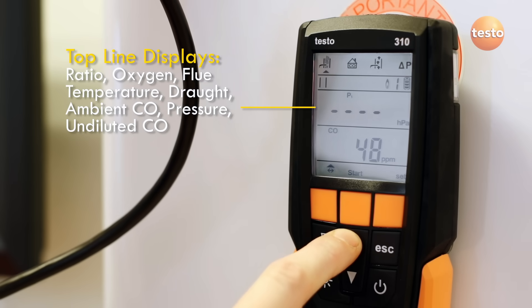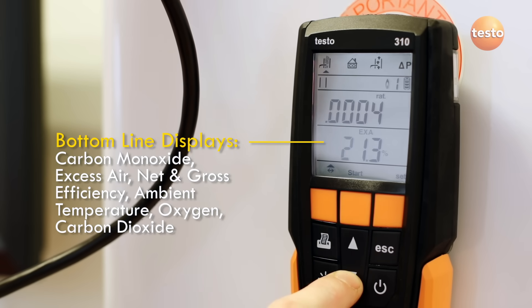To review the measurements, use the up and down arrow keys to scroll through the display. The up key cycles to measurements on the top line, whilst the down key changes the measurements shown on the bottom line.